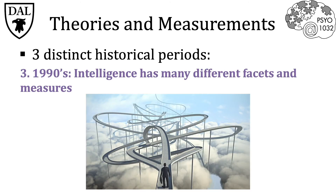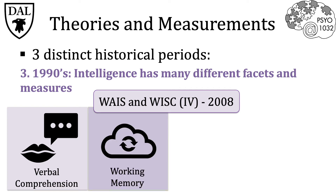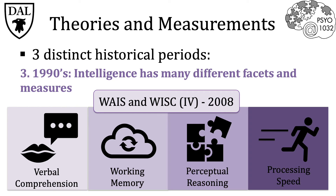The third and current era came in the 1990s, when intelligence tests began to recognize the many different facets and measures of intelligence. Carroll took Cattell-Horn theory and analyzed all known intelligence tests, linking different models of intelligence from single qualities to multidimensional models. This set up the current paradigm of intelligence tests that assess different forms of intelligence. For example, the fourth version of the Wechsler Adult Intelligence Scale and the Wechsler Intelligence Scale for Children, released in 2008, now include four dimensions: verbal comprehension, working memory, perceptual reasoning, and processing speed.